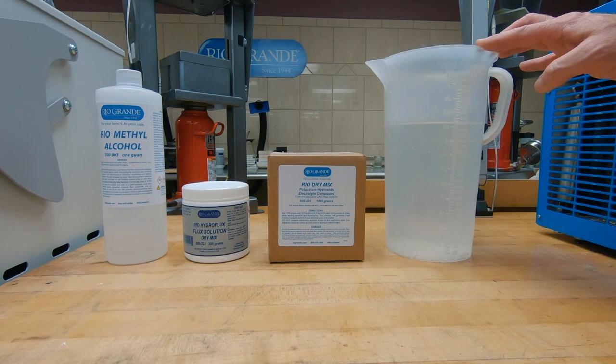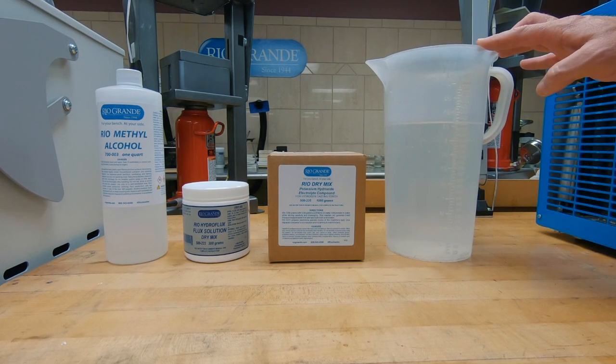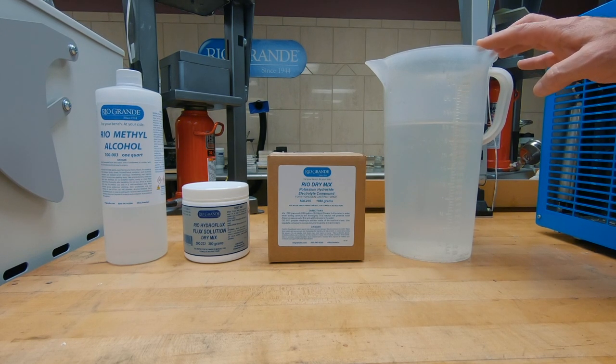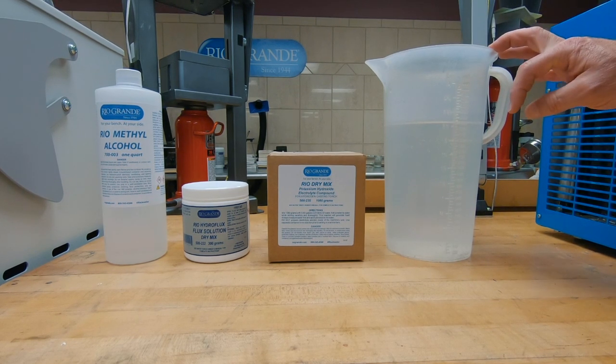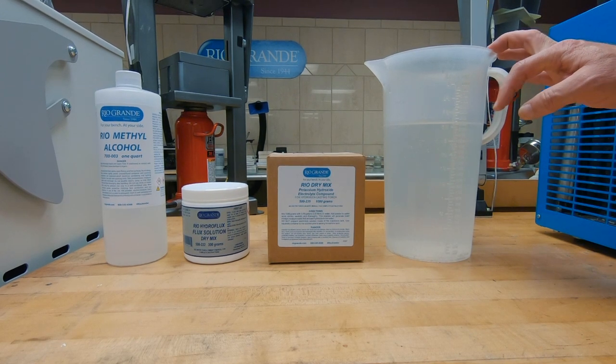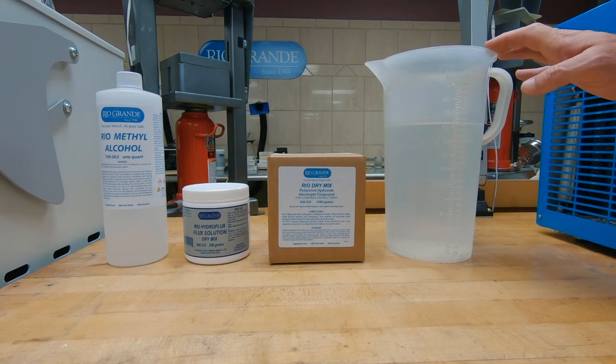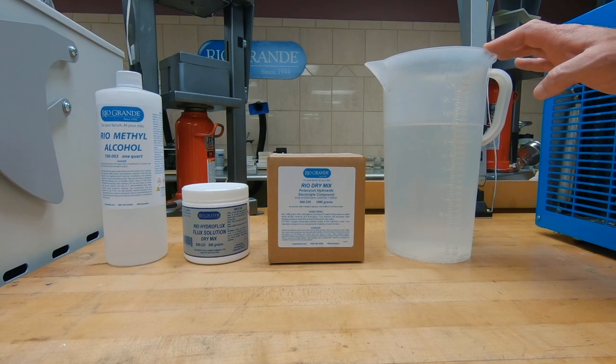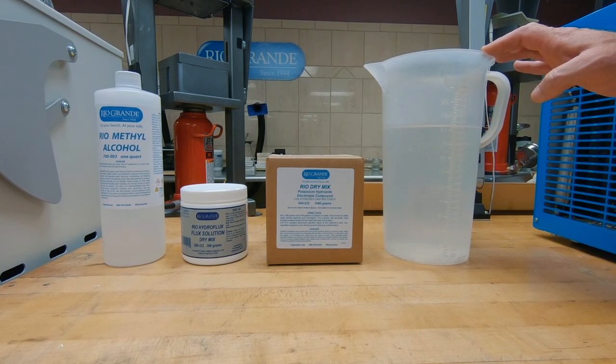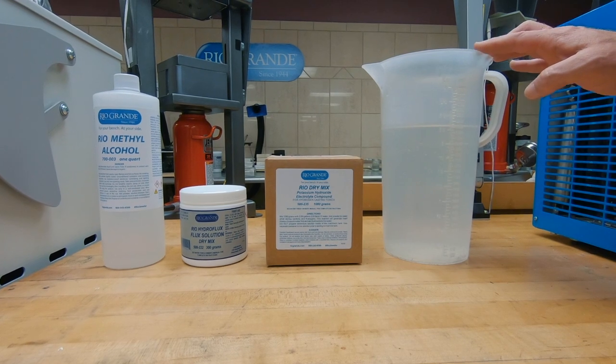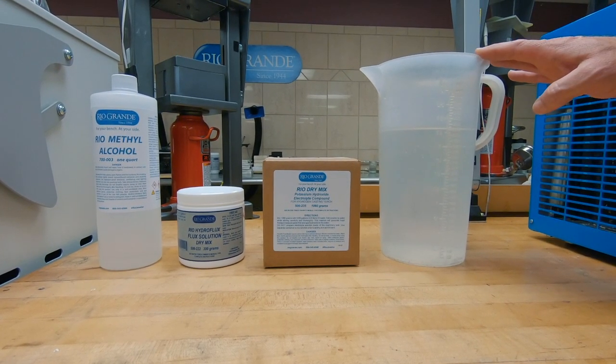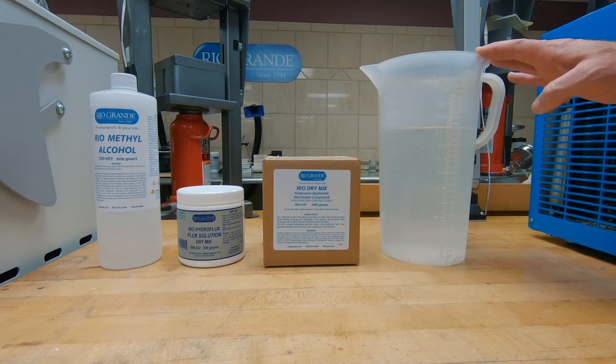The container that you mix this up in needs to be a container that is going to withstand the temperatures of boiling water. There is an exothermic reaction that happens whenever you mix the electrolyte solution. It gets very hot. The solution can actually even boil. You might hear a boiling noise from it and it does get very hot. So make sure that the container that you're using is something that will withstand that.